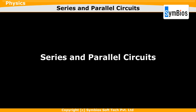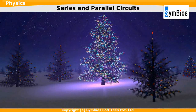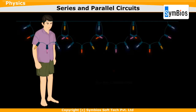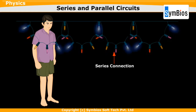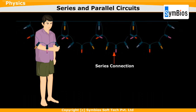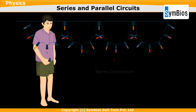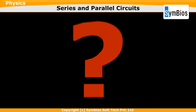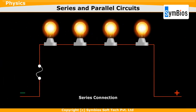Series and Parallel Circuits. You have seen the miniature lights used for decoration during functions or festivals. Small tiny bulbs are combined and a chain of lights is created. If you take one bulb out of the string, all other bulbs go off. Why? In a string of bulbs, these lights are connected in a series.